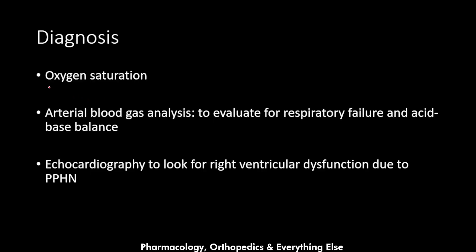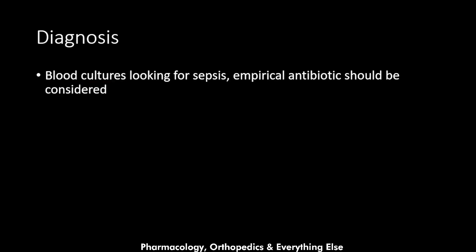We also measure oxygen saturation; if it is less than 95%, we supply oxygen to the baby. Arterial blood gas analysis is performed to evaluate for respiratory failure and assess acid-base balance. Echocardiography is ordered to look for right ventricular dysfunction due to persistent pulmonary hypertension of the newborn. Blood cultures are ordered to look for sepsis, and empirical antibiotics should be considered if sepsis is suspected.